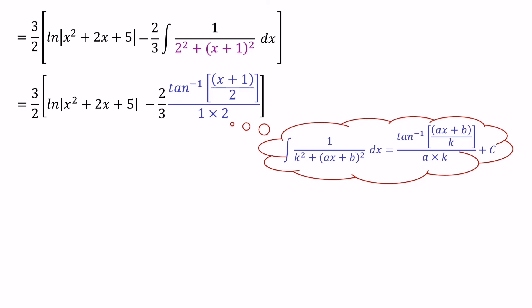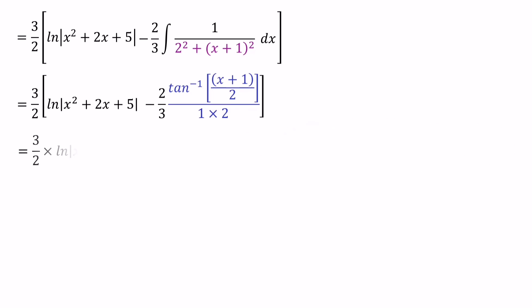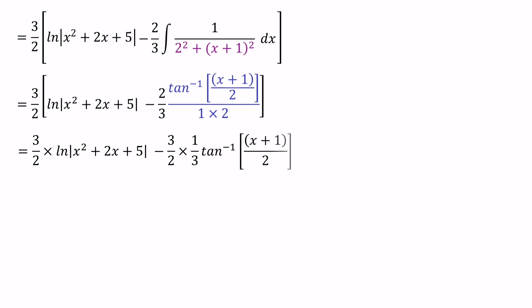Using this formula, the integral of 1 over 2 squared plus x plus 1 all squared is tan inverse of x plus 1 over 2, divided by 1 times 2. After removing the brackets we get 3 over 2 times ln of x squared plus 2x plus 5, minus 3 over 2 times 1 over 3 times tan inverse of x plus 1 over 2. The final answer is 3 over 2 ln of x squared plus 2x plus 5, minus one half times tan inverse of x plus 1 over 2. Thank you so much.